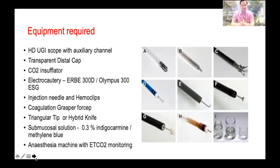Coagulation grasper forceps are used to coagulate intervening vessels and to control any bleed which happens during tunneling and myotomy. The TT knife and hybrid knife are mainly used for dissection from the mucosal incision through to myotomy. Mucosal injection solution like 0.3% indigo carmine or methylene blue should be used, as this solution allows better visibility of the intervening vessels and areolar tissue.